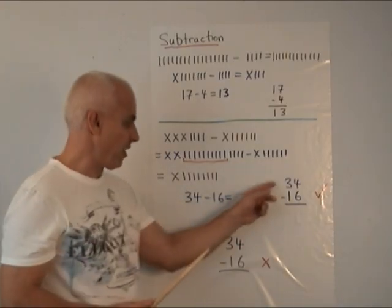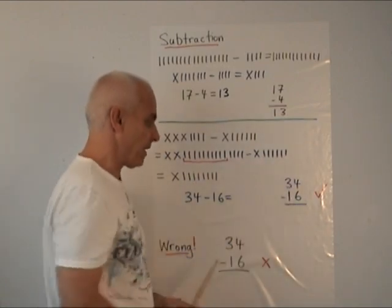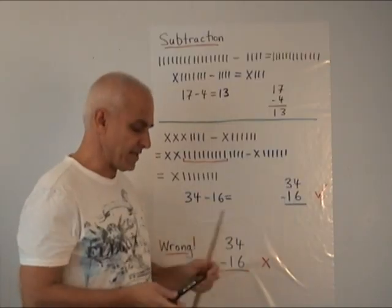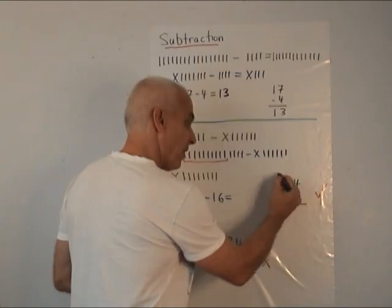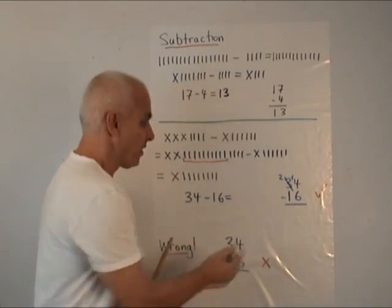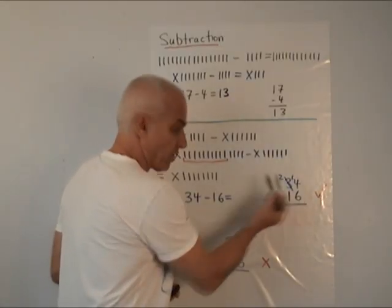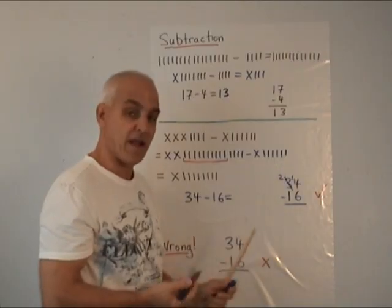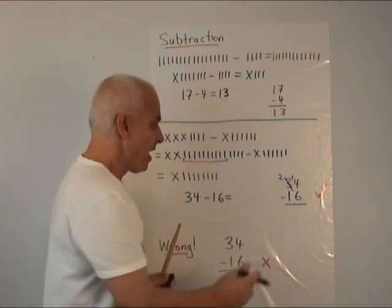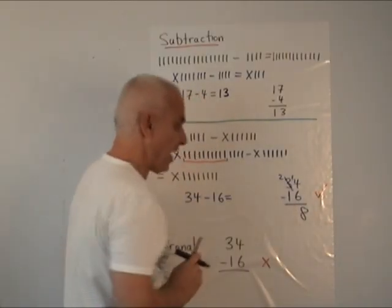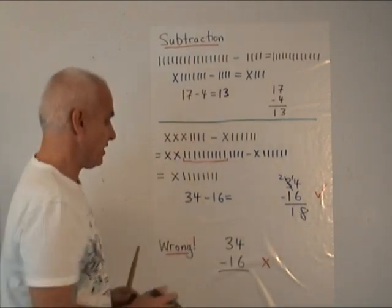What we do with Hindu-Arabic notation is exactly parallel to this. So we write 34 minus 16. 4 minus 6 doesn't work. So we need to change one of our tens for 10 ones. So instead of having 3 tens, we now have 2 tens. Instead of having 4 ones, we now have 14 ones. The actual number that we've got hasn't changed. Just the denominations that are involved have changed. But now 14 minus 6, that works. That gives us 8. And 2 minus 1 is 1. So we have 18 as the answer.